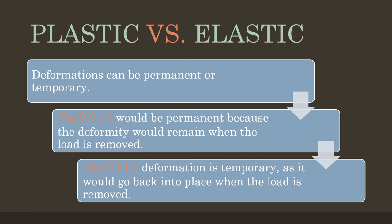So what is the difference between plastic and elastic? We know that deformations can be permanent or they can be temporary. If something is considered plastic, that would be permanent because the deformity would remain when the load is removed. If it's elastic, the deformation is temporary — kind of like elastic clothing — it would go back in place when the load is removed.